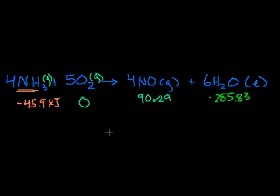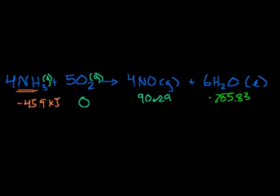Now you might attempt to just add the products and subtract the reactants — and you'd be almost right, but you'd get the wrong answer. These heats of formation are per mole, but in this reaction we have 4 moles of ammonia, 5 moles of oxygen, 4 moles of nitrogen monoxide, and 6 moles of water. So we have to multiply each heat of formation by the number of moles.